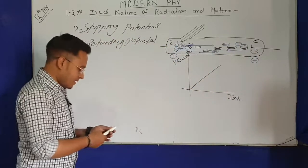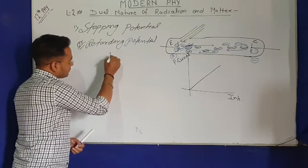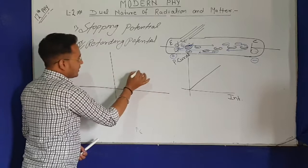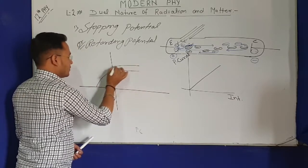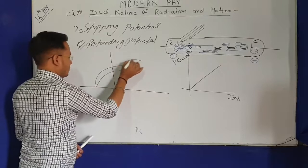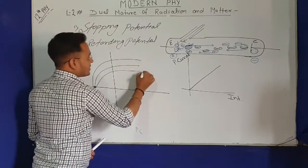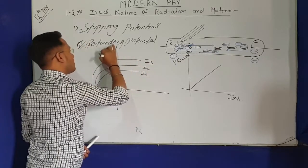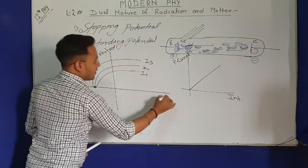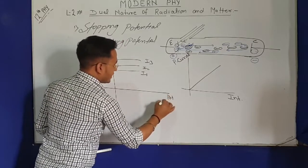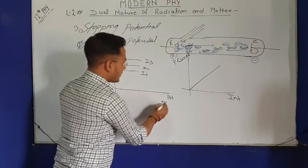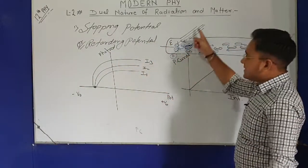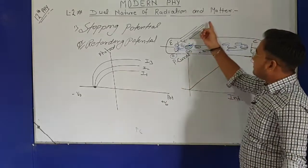Now let's look at the related graphs, which are also in the NCERT book. This is the graph of photo current versus potential. Here positive potential is on one side and negative potential on the other. We have three intensity levels: I1, I2, and I3, where I3 > I2 > I1. As we increase intensity, observe what happens.